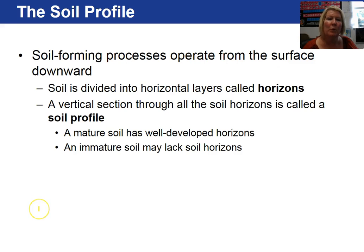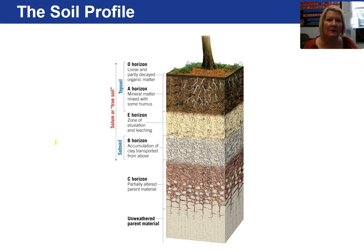Soil forming processes operate from the surface downward and we can divide the layers into what we call horizons. A vertical section through all of the horizons is called a soil profile. Starting at the top we have the O horizon — O for organics. It is a dark layer because of the presence of organics.